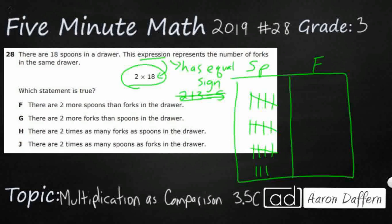So when you see that word expression, we're just looking at an operation or maybe two or three operations with no equal signs. Represents the number of forks. So I need to represent spoons and forks. And my only clue is 2 times 18. Well, this 18 has got to be my spoons because we've already labeled that.